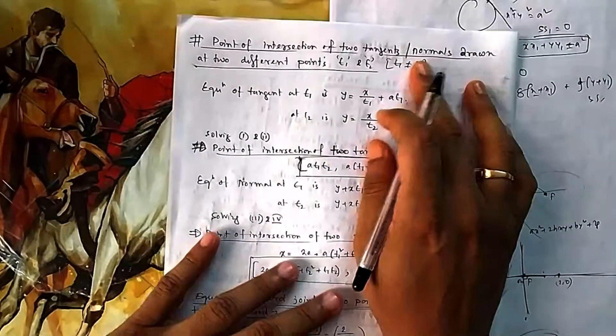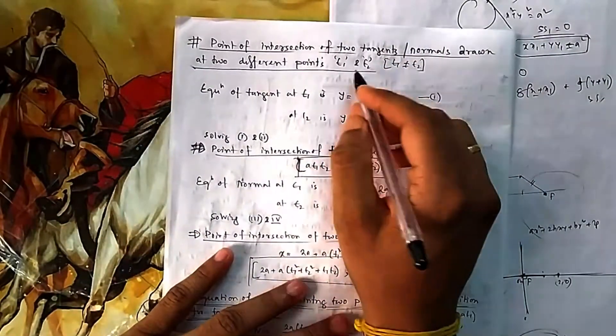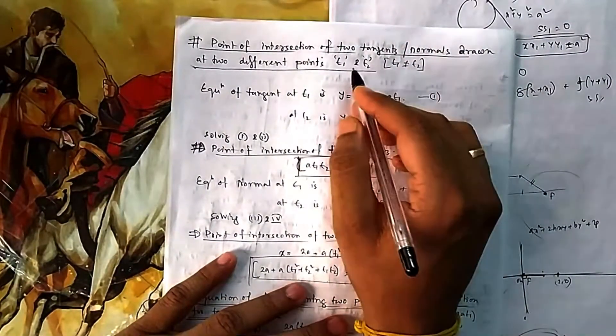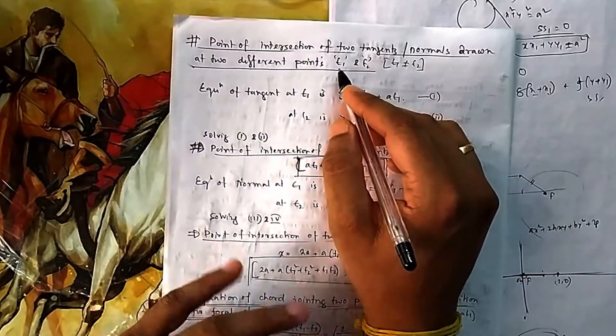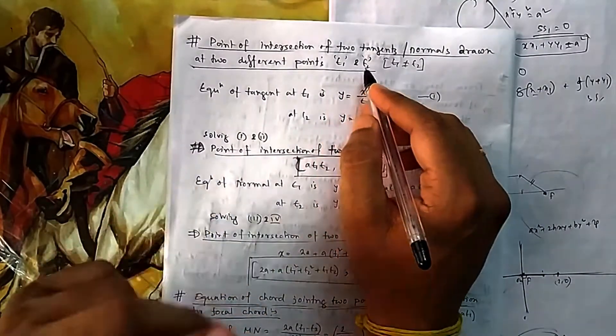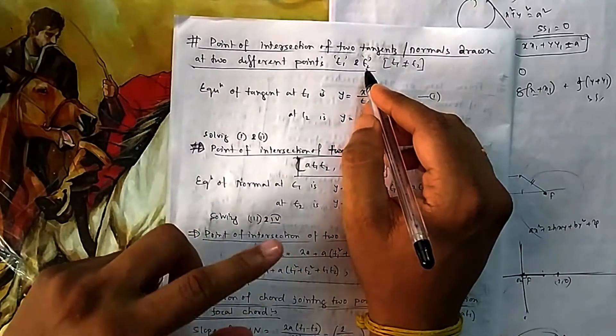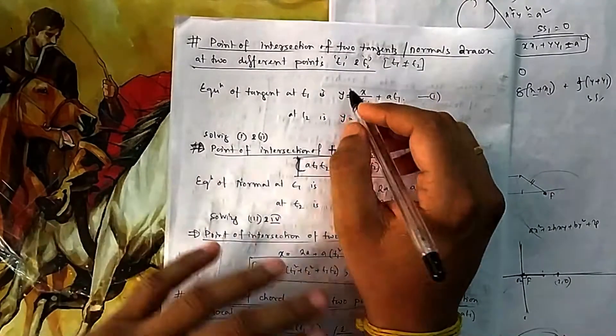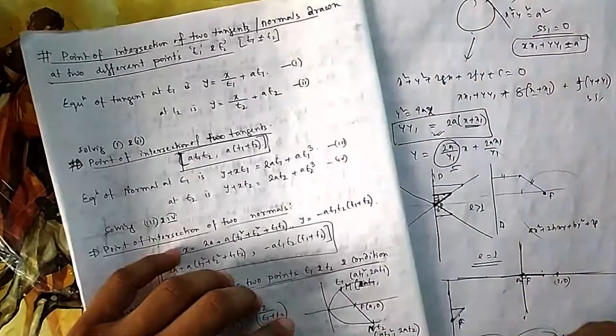So point of intersection of two tangents or normals drawn at the point t1, t2. So I told you t1 means a t1 square, t2 means a t2 square. That means the point t1 is (a t1 square, 2a t1) and t2 is (a t2 square, 2a t2).